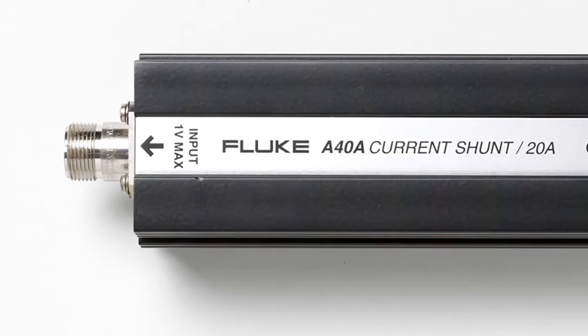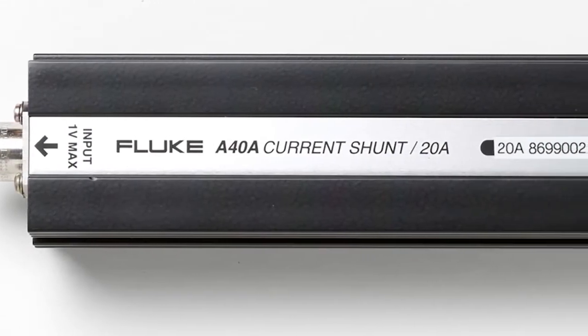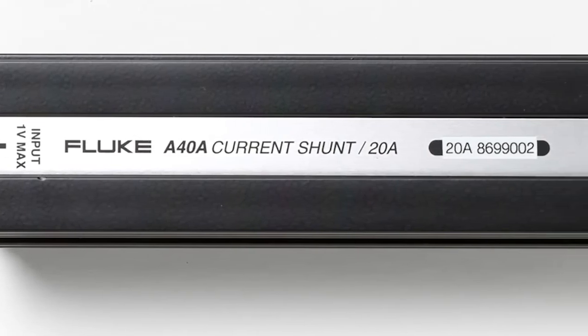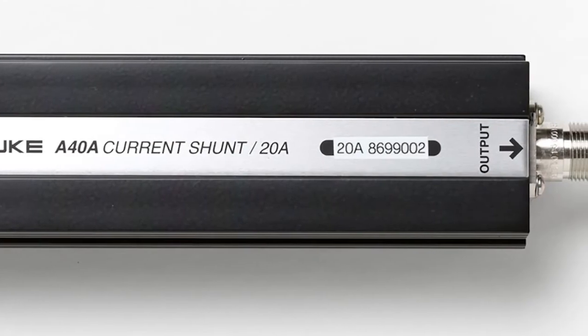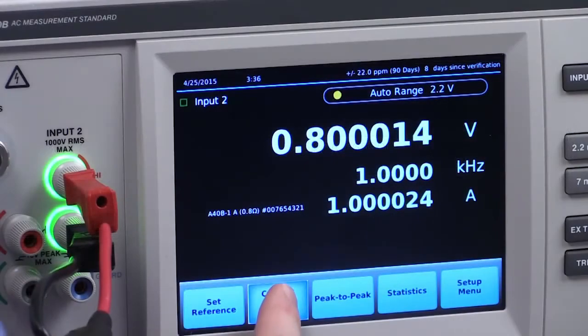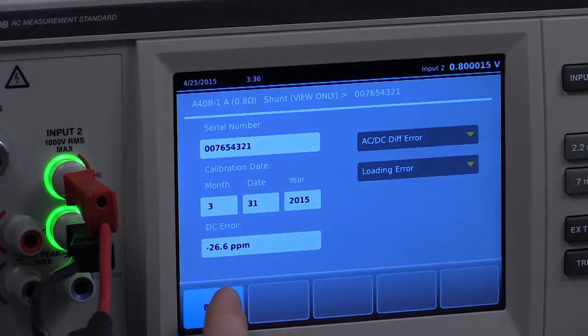Fluke A40 and A40A shunts can be used for relative current measurements. The 5790B can also use custom shunts that have been calibrated as a system along with the 5790B. The 5790B stores all shunt properties and coefficients which are used to calculate the current measurement.